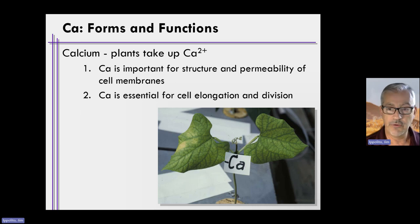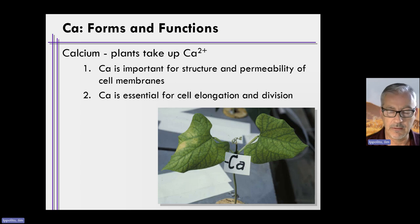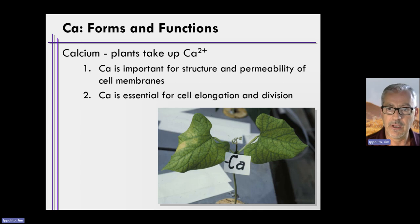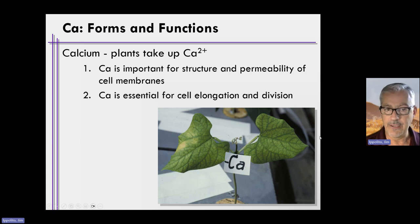You can see some of the effects of no calcium addition on what looks like a bean — maybe soybean, or just a common dry bean. You see some curling of the leaves because of lack of structure for the cells. And then you actually see something happening with the terminal bud and lack of growth, which we'll talk about on the next slide.